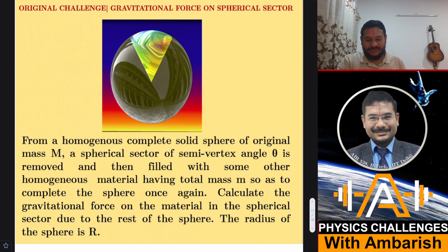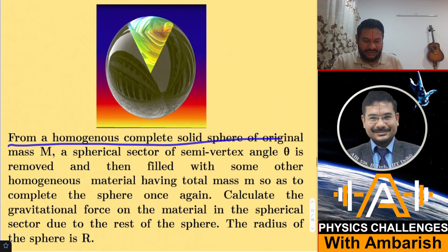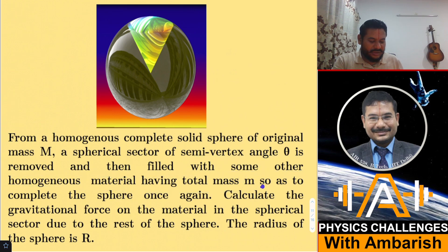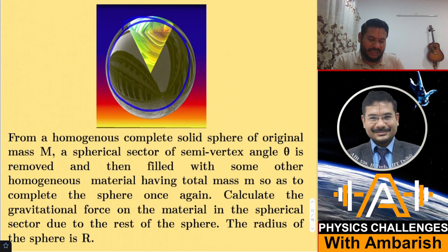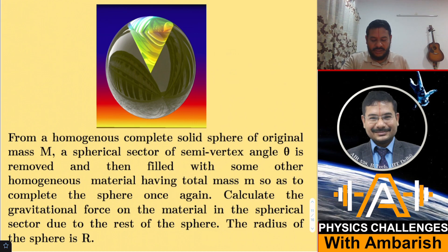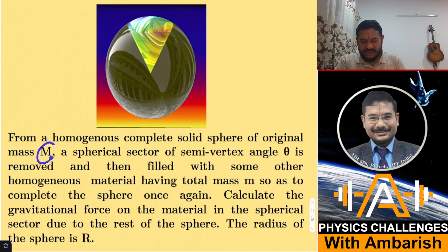Let's see what is being asked. From a homogeneous complete solid sphere of original mass M, a spherical sector of semi-vertex angle theta is removed and then filled with some other homogeneous material having total mass m, so as to complete the sphere once again. So what we did: we had a complete sphere — the whole thing was the original material. We hollowed out a sector and poured in a different material. Original mass was capital M and the new mass filled in is small m.